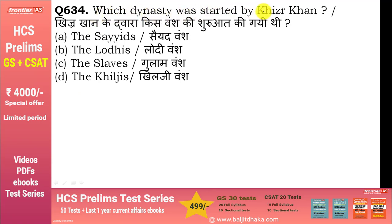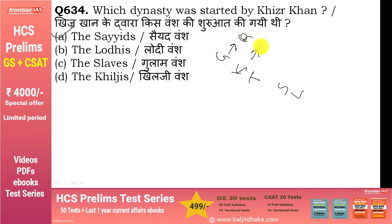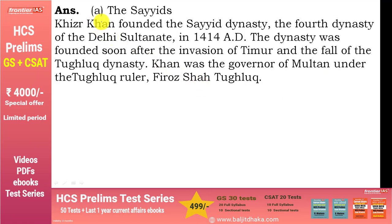Which dynasty was started by Khizr Khan? Khizr Khan ने Sayyid dynasty की शुरुआत की। Delhi Sultanate का chronological order याद रखने के लिए: Gulam (Qutbuddin Aibak), Khilji (Jalaluddin Khilji), Tughlaq (Ghiyasuddin Tughlaq), Sayyid (Khizr Khan), Lodi (Bahlul Lodi)। Khizr Khan ने 1414 में found किया था, Timur Lang के invasion के बाद Tughlaq dynasty के fall होने पर।